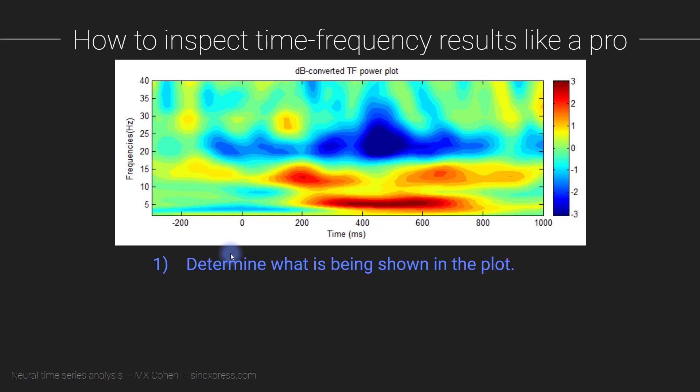And let's start with step one. So determine what is being shown in the plot. So we can see from the title, this is dB that stands for decibel converted or normalized time-frequency power. Okay, so of course, you haven't learned yet what decibel normalization means. But this does give some information about what we are looking at. So this shows the time-frequency power converted into decibel units.